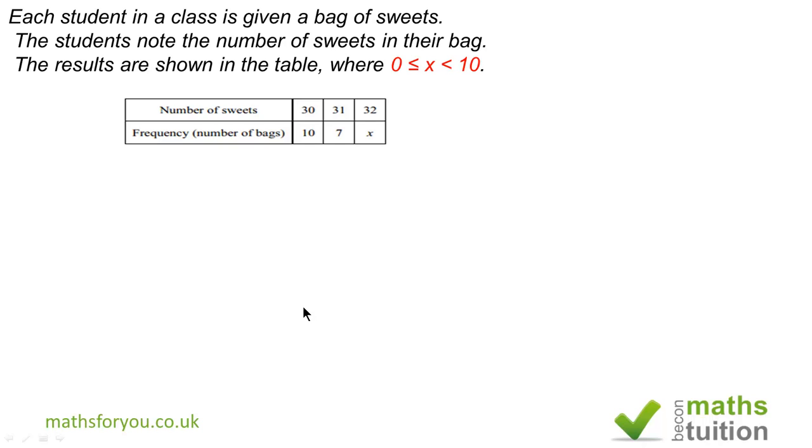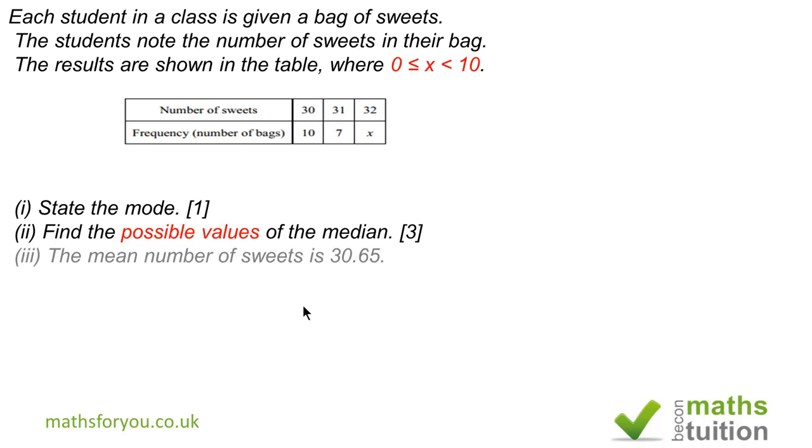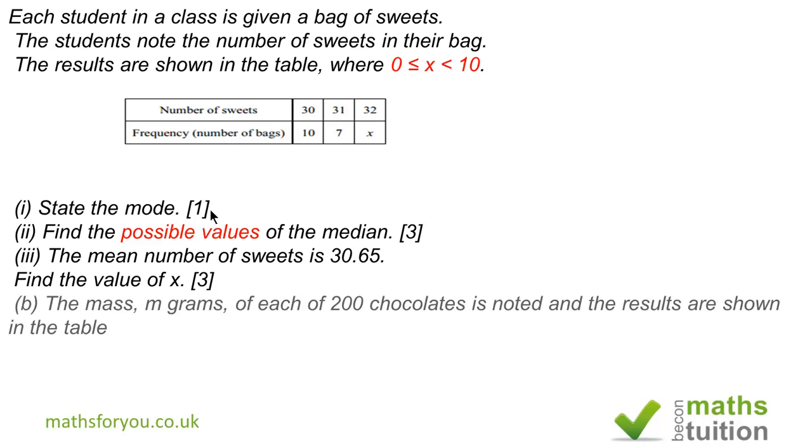This is a question where I have highlighted some portions which are very important: the inequality x between 0 and 10, and then the phrase possible values. The numbers in square brackets are the marks awarded for each section.